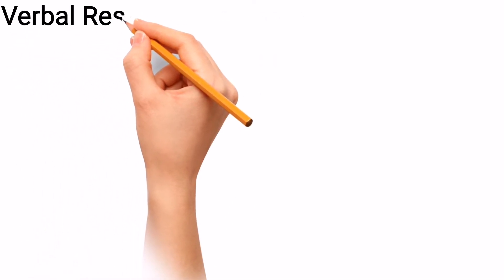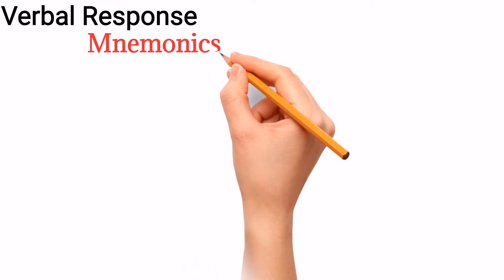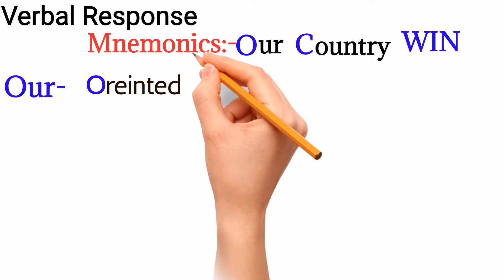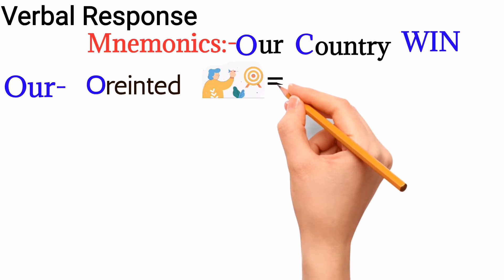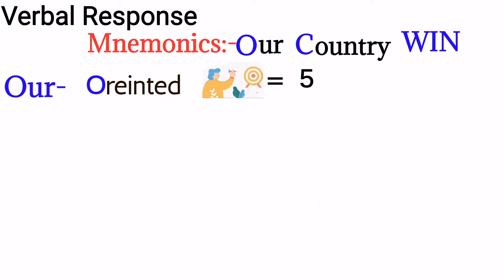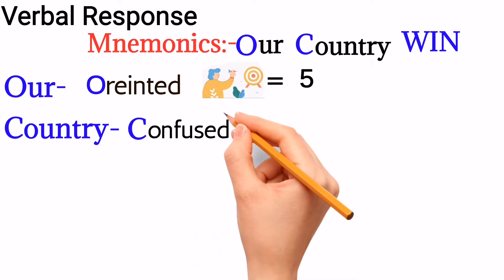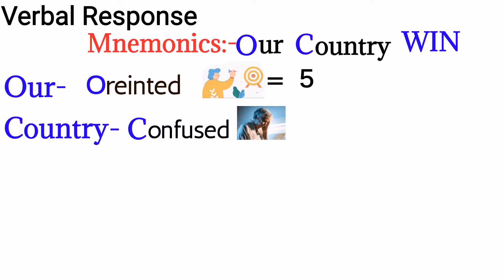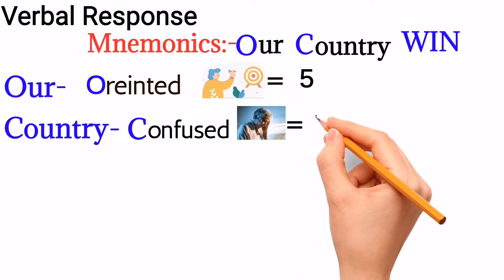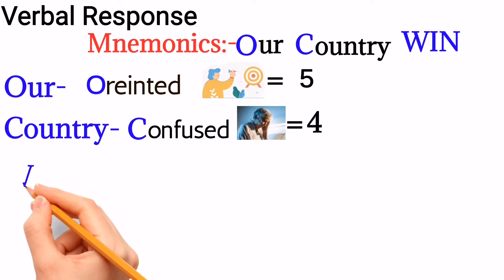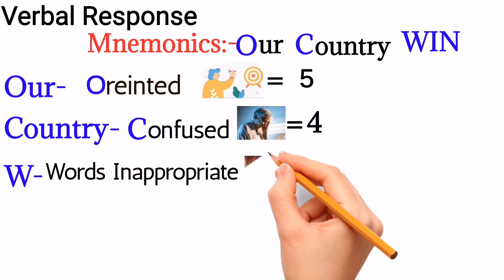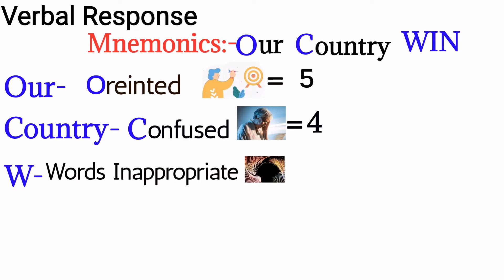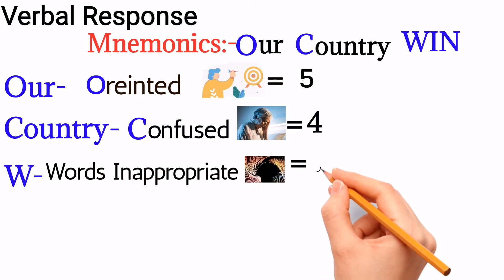Verbal response mnemonic: O is for Oriented — the patient is oriented in time, place, and person exactly, then the score will be 5. C is for Confused — you ask the patient where are you and he replies 'I am at home' or 'in a hotel,' then the score will be 4. W is for Words inappropriate — the patient says words like 'football' or 'hotel' without any scenario context, then the score will be 3.